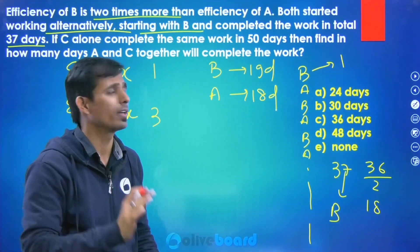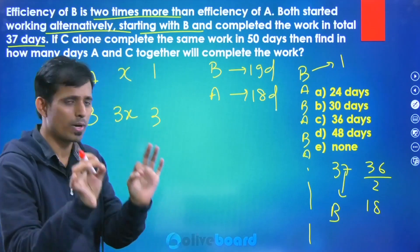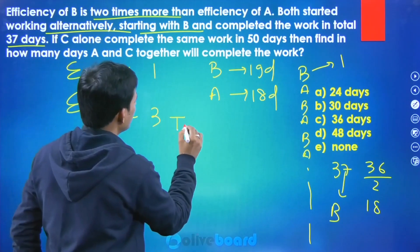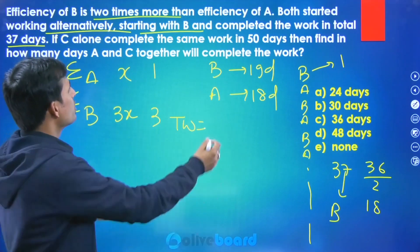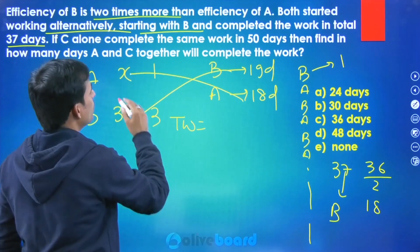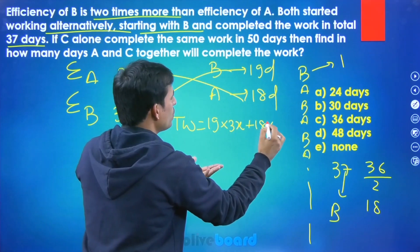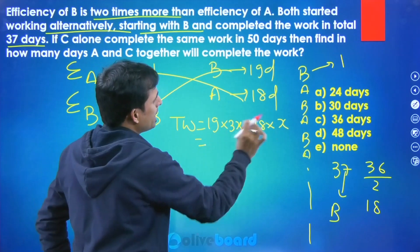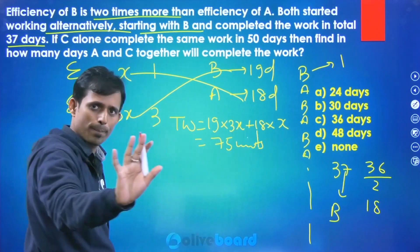Now see, complete the same work in 50 days in your question. So first what you have to do, find the total work. Total work kya hota hai, just like time into efficiency. So 19 into 3 and 18 into 1. So 19 into 3x or 3 and 18 into x or you can write 1. So what is the value? 57 plus 18, so 75 units of work is the total work, correct.